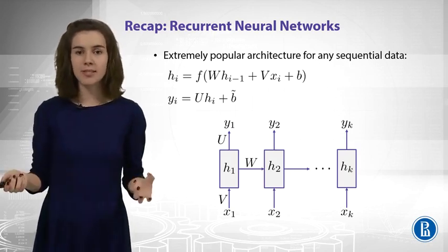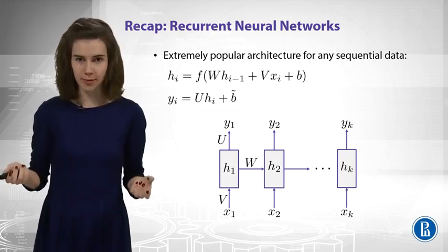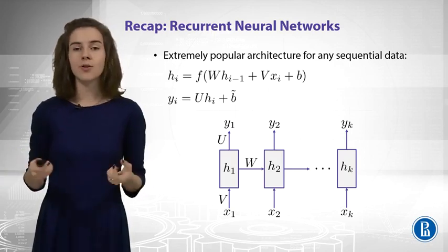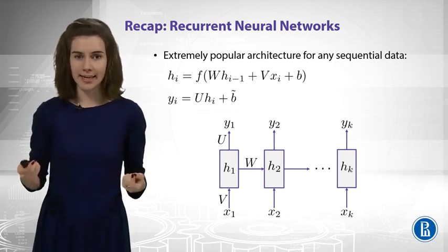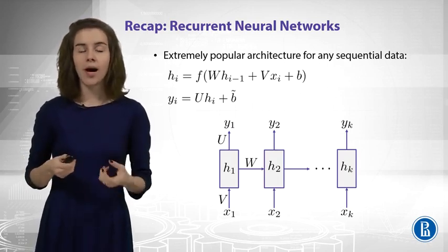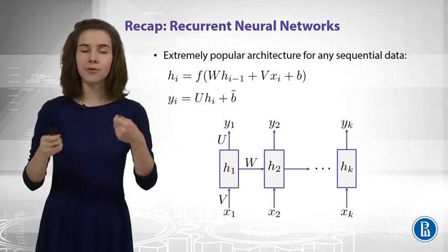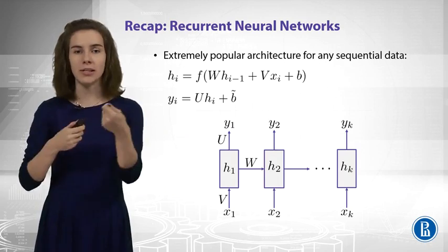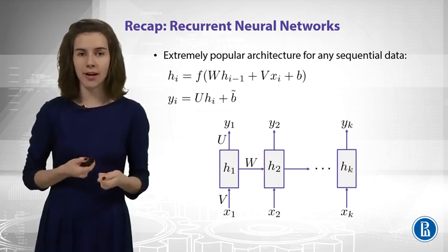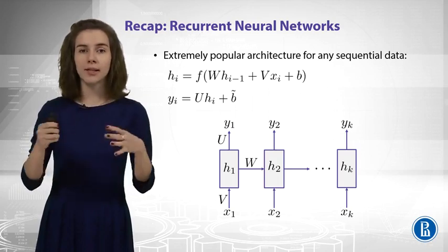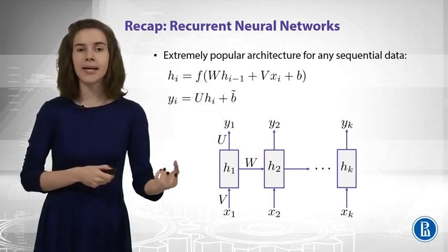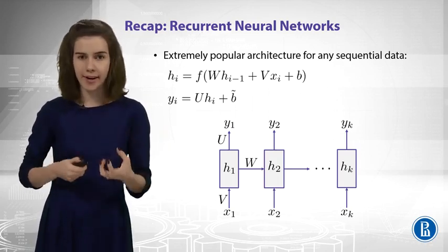You have an input sequence X and you have an output sequence Y. Importantly, you also have some hidden states H. Here you can see how you transit from one hidden layer to the next one — this is just some activation function f applied to a linear combination of the previous hidden state and the current input.